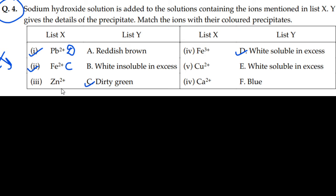Zn²⁺. This is white soluble in excess, so this will be E. If both are soluble in excess, then we will write it first. So this will be D.